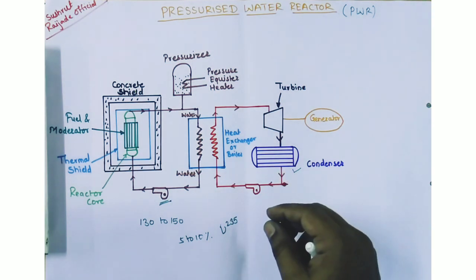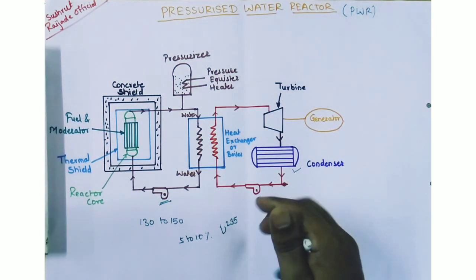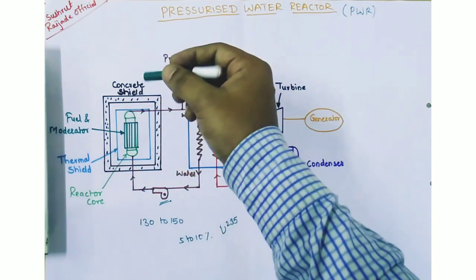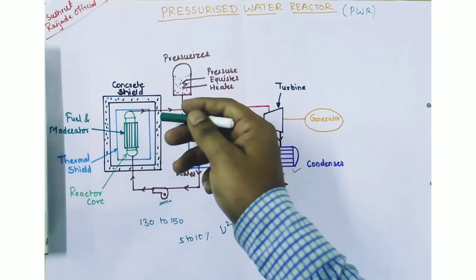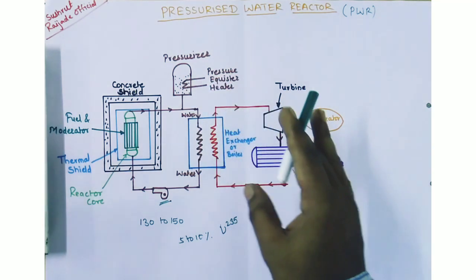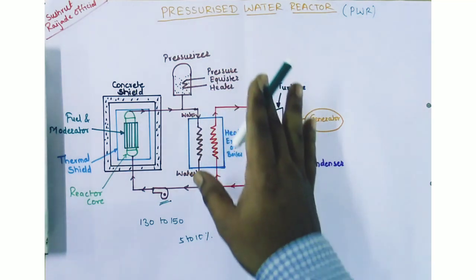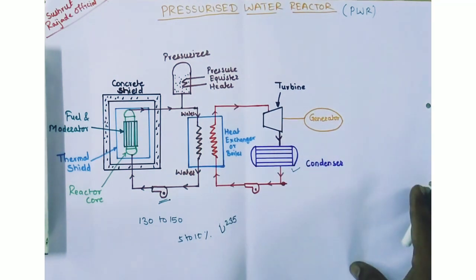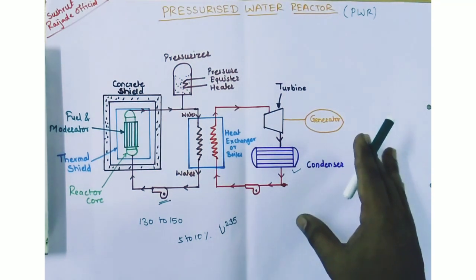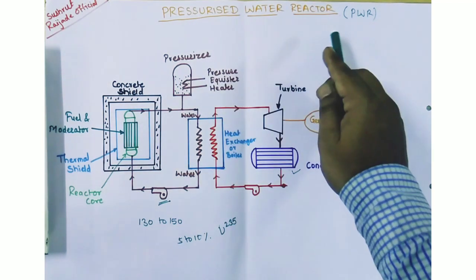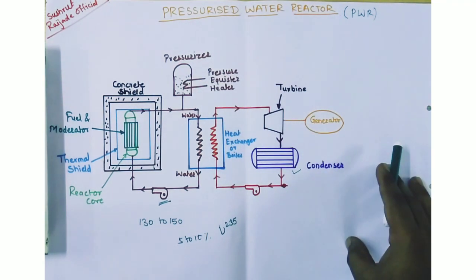The sixth disadvantage is that the plant needs to be shut down for fuel charging — when fuel rods need to be replaced, the plant must be shut down. This is the overall construction, working, advantages, and disadvantages of the pressurized water reactor. Thank you.